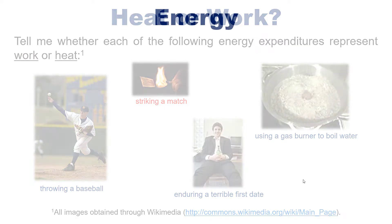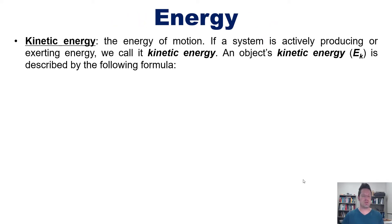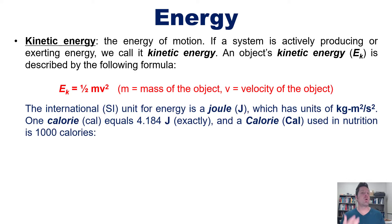Now, as it turns out, there are two different kinds of energy. The first is kinetic energy, which is the energy of motion. If a system is actively producing or exerting energy, and I mean it's like in the action of energy being produced or used or given off or doing something, we call that kinetic energy. An object's kinetic energy, abbreviated with E sub k, is described by the following formula: E sub k equals one-half mv squared, where m is the mass of the object and v is the velocity of the object. Now, the international or SI unit for energy is a joule, abbreviated with the letter J, which has units of kilogram meter squared per second squared. Confusing? Yeah.